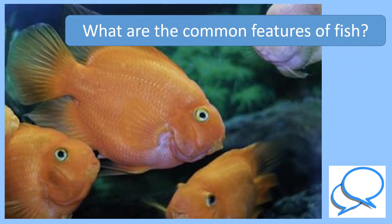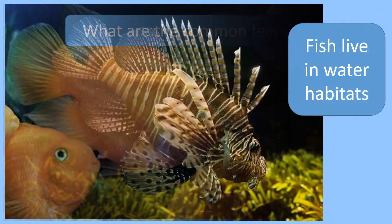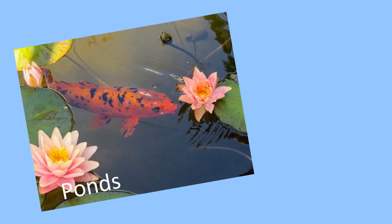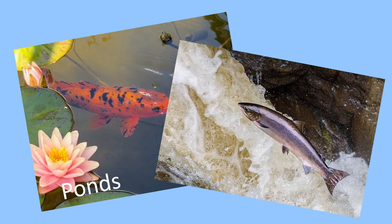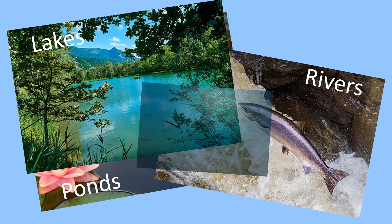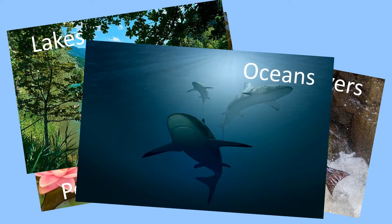But what are the common features of fish? All fish live in water habitats. Some live in ponds, some live in rivers, some live in lakes, and some fish live in the ocean.